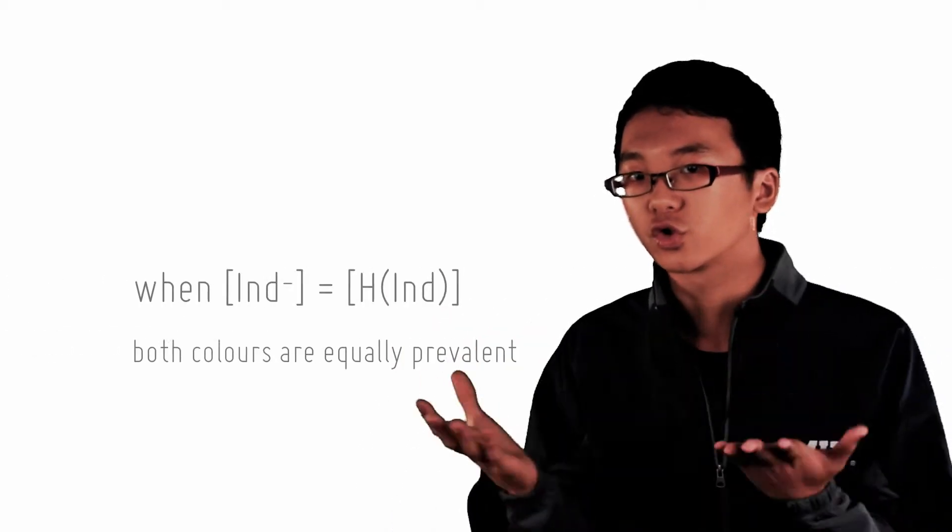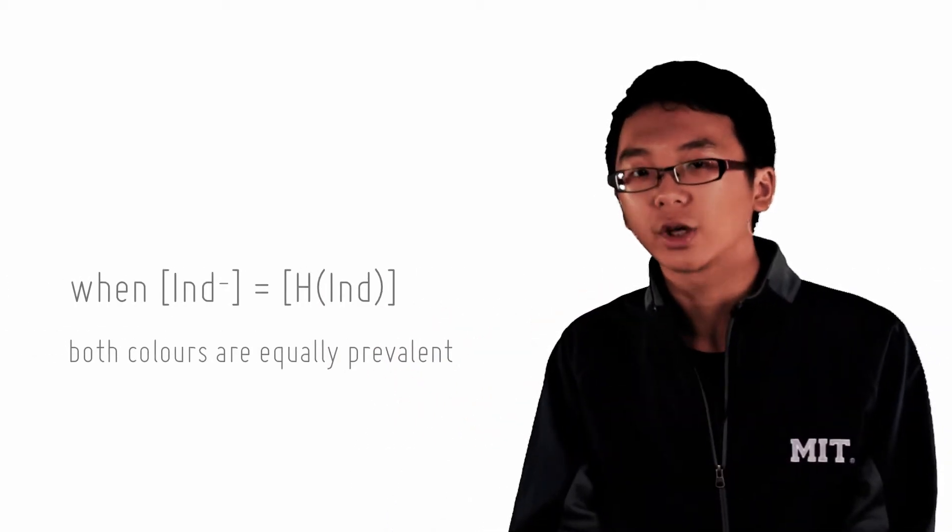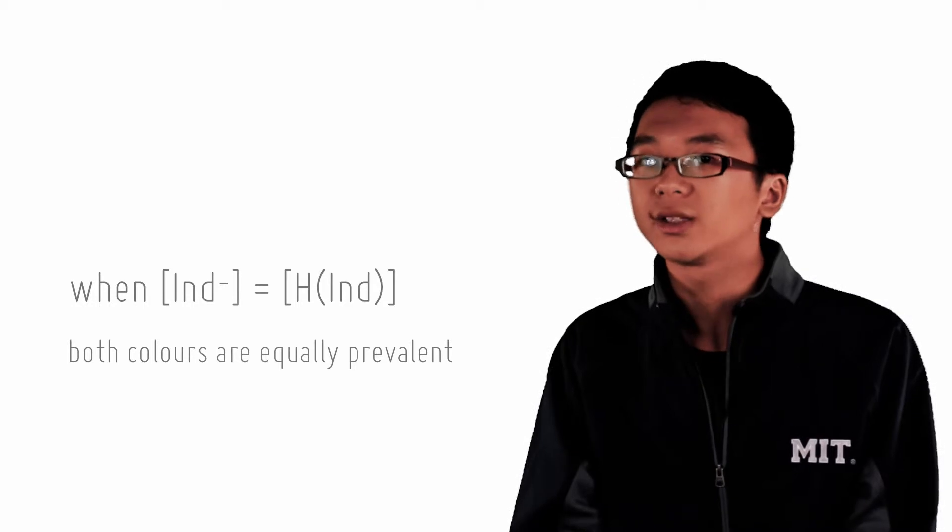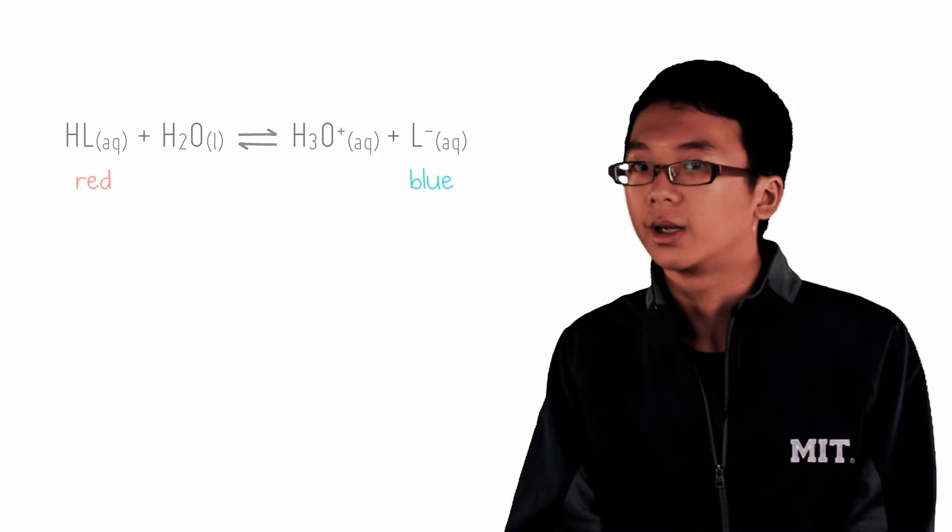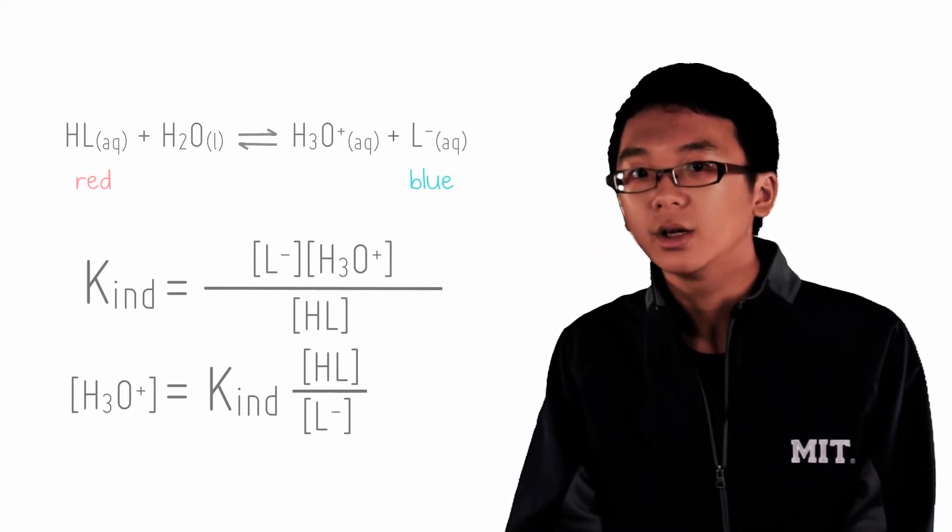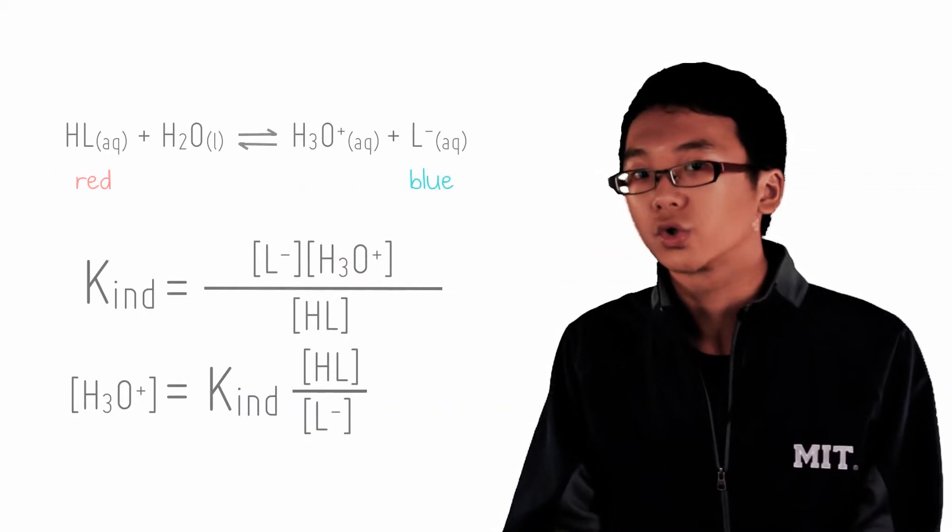That must be the point where the concentration of indicator and its conjugate base are equal. Let's use another example, litmus indicator. If we looked at the equilibrium expression for the litmus indicator, which is a weak acid, you get Kin equals to this.